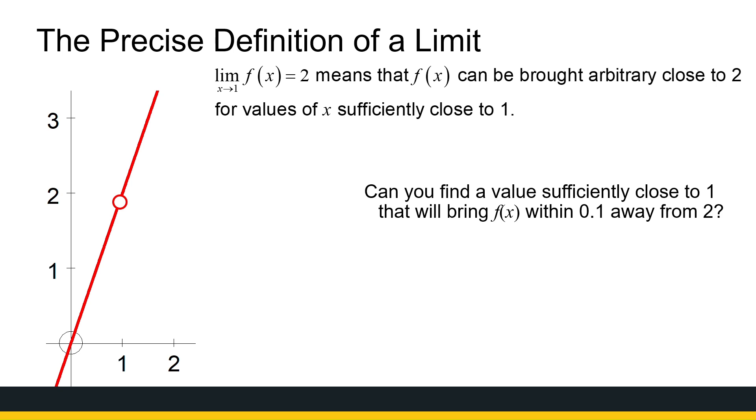We want to bring my y values arbitrarily close to 2 for values of x sufficiently close to 1. Let's pick numbers. Let's say I want to end up within 0.1 away from 2. If that is 2.1, and that is 1.9, then I've got my epsilon value is 0.1, because that's how far I'm straying away from 2.